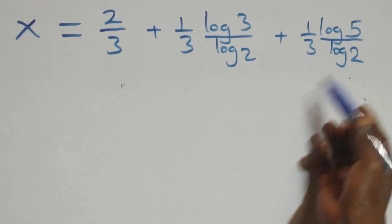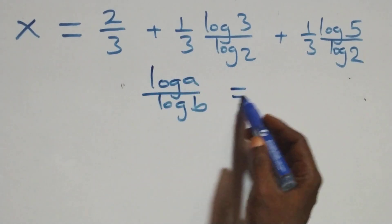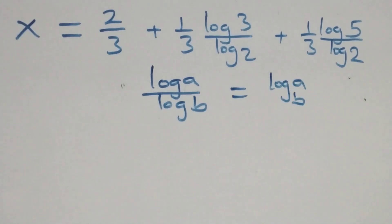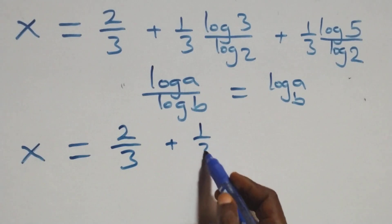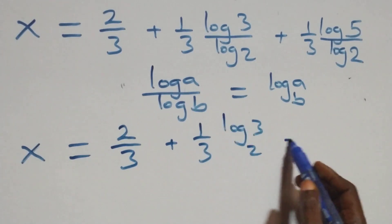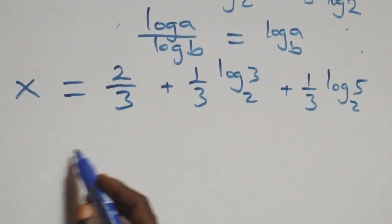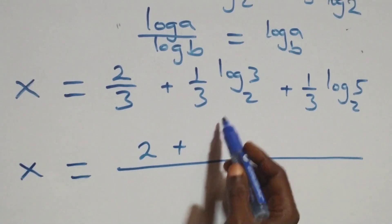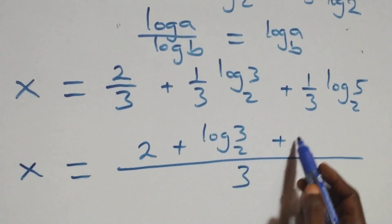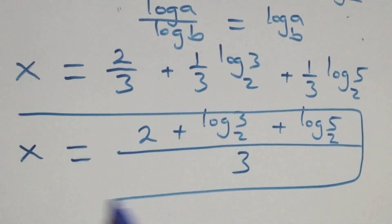Then here we apply change of base: when we have log a over log b, this is the same thing as log a to base b. So all we have becomes x equals to 2 over 3 plus 1 over 3 log 3 base 2 plus 1 over 3 log 5 base 2. Bringing this together as one fraction, x equals to (2 plus log 3 base 2 plus log 5 base 2) over 3.